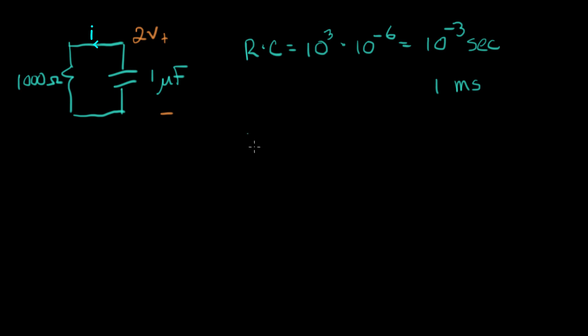And now we can say V of T equals V naught two volts times E to the minus T over one millisecond. And that's our natural response for this particular circuit.